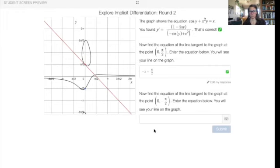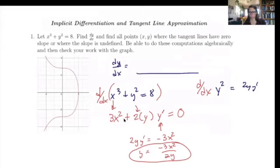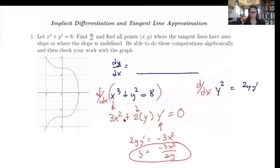That's the overview of implicit differentiation. Going back to x cubed plus y squared equals 8, the x cubed term we treat like a normal derivative and get 3x squared. The y squared is stuff squared, so we do 2 times stuff, copy down the stuff, multiply by stuff prime — coming right out of the chain rule. The derivative of 8 is zero. Then isolate y prime: move the 3x squared to the other side, divide everything by 2y, giving y prime equals negative 3x squared over 2y.